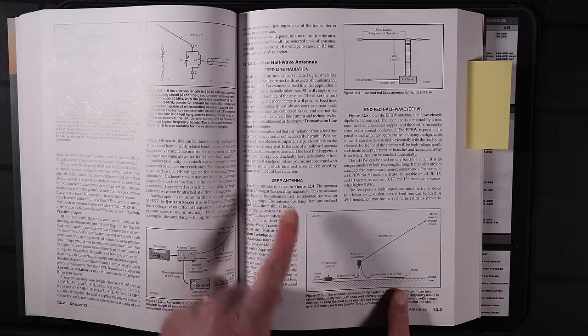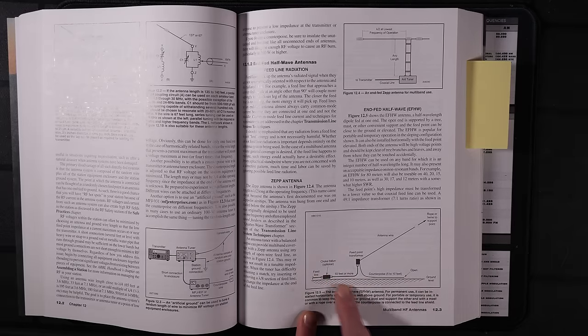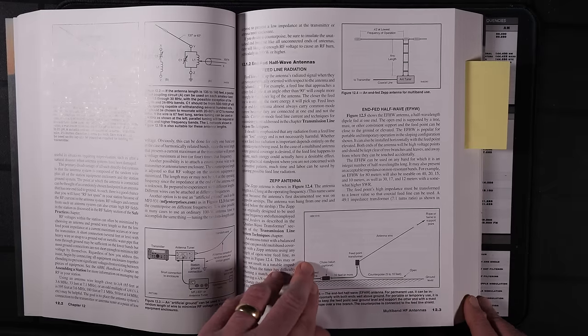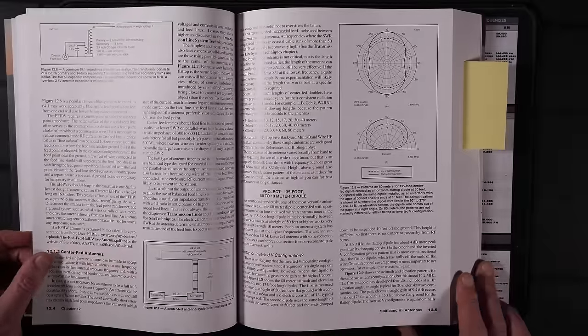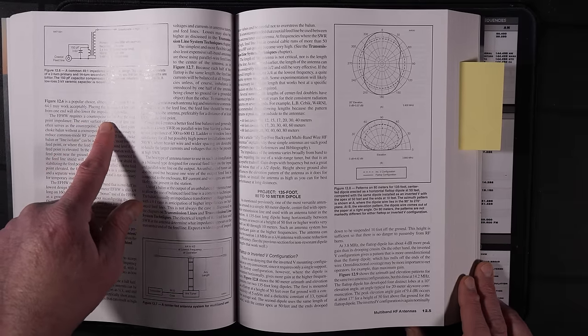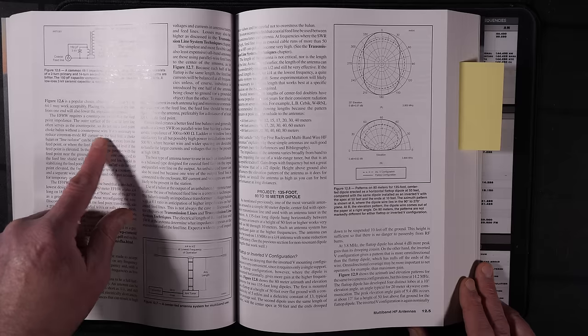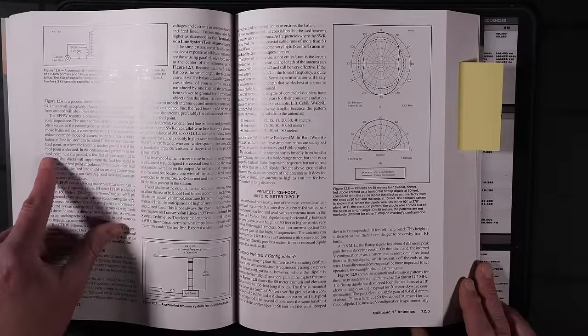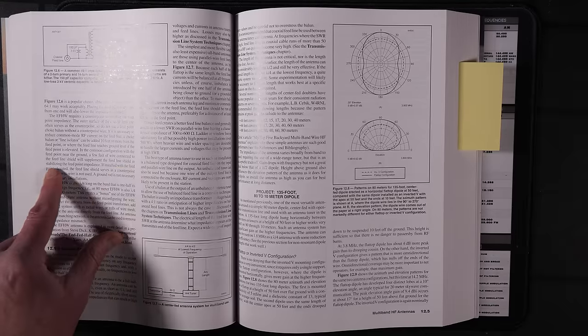In the antenna book, it does recommend using a counterpoise for the NFED HalfWave antenna. And the reason being is that if you don't have a counterpoise for this style antenna, common mode currents may travel down to the feed line, or your feed line itself might become the counterpoise for the antenna. So, it functions very well with a counterpoise. Now, of course, you don't always have to use the counterpoise, because it says the NFED HalfWave requires a counterpoise to stabilize the feed point impedance. The outer surface of the coaxial line often serves as a counterpoise.